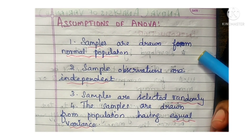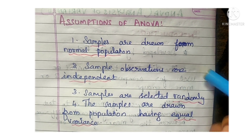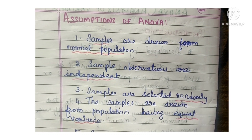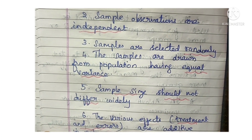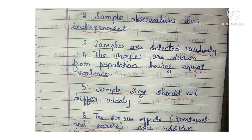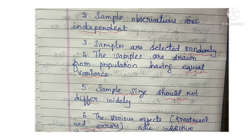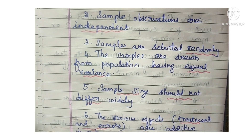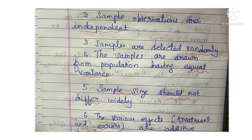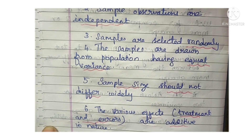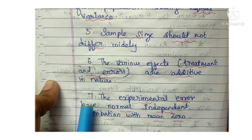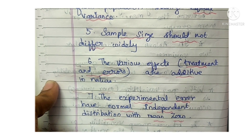Additional assumptions include: sample size should not differ widely — for example, having 5 in one group and 25 in another is too wide a difference; the various effects, that is treatment and errors, are additive in nature; and the experimental error should have a normal independent distribution with mean equal to 0.